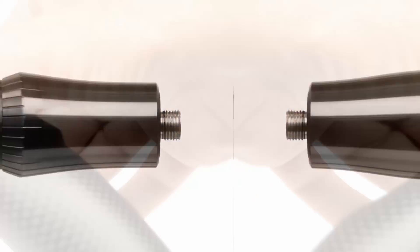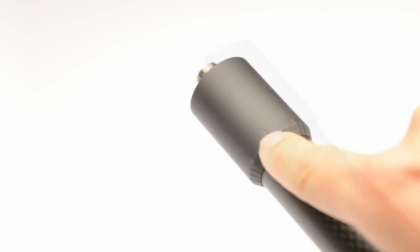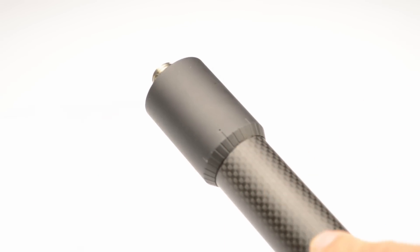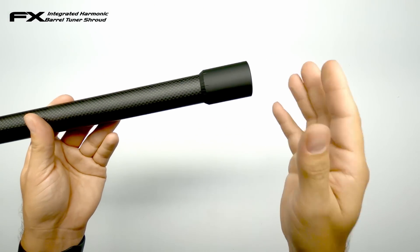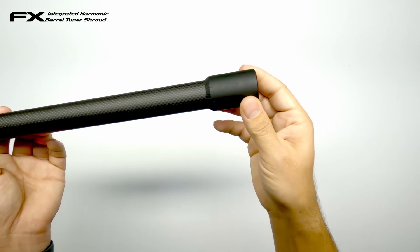This part in the front can be turned and has some nice indexing slots to keep track of what's your best setting. When you turn it, it moves the weight ever so slightly back and forwards. By doing this you adjust the harmonic note of your gun or barrel I should say.